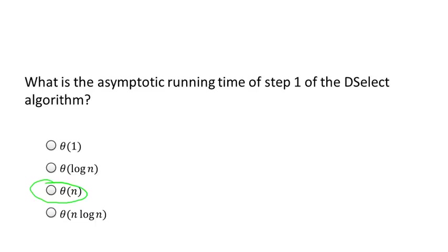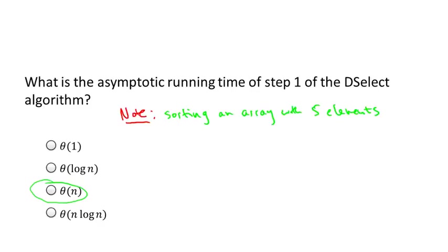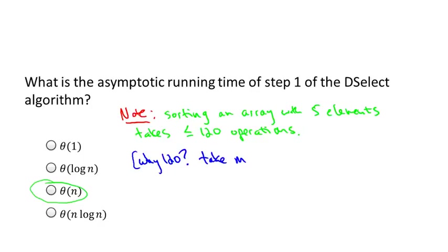We're doing something much more modest than sorting the entire length-n input array. All we're sorting are these small subarrays with only five elements, and that can be done in constant time. To be more precise: sorting an array of five elements takes only some constant number of operations — let's say 120. If we use merge sort and plug m=5 into our earlier formula, we get 6 × 5 × log₂(5) + 1, and since log₂(5) is at most 3, that gives at most 120 operations.